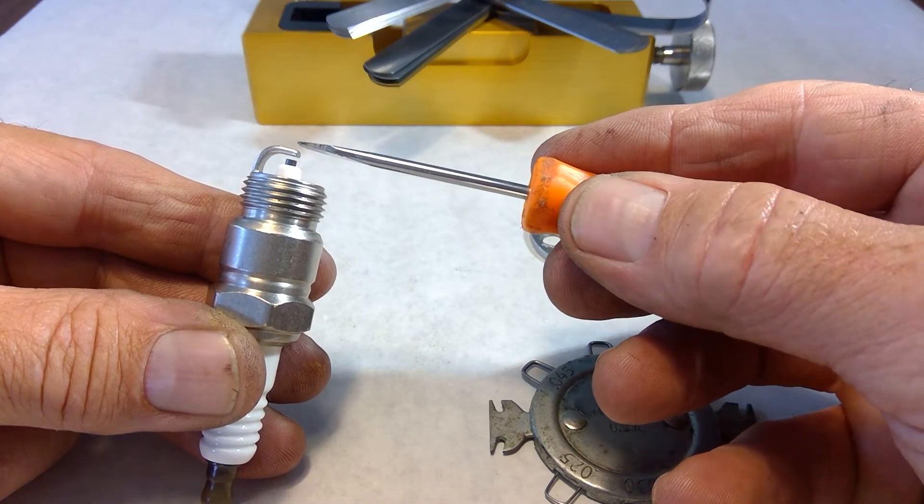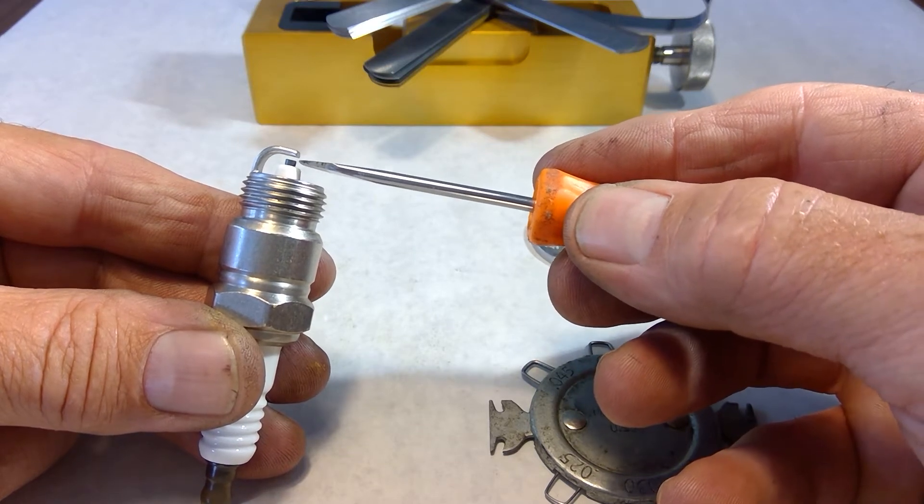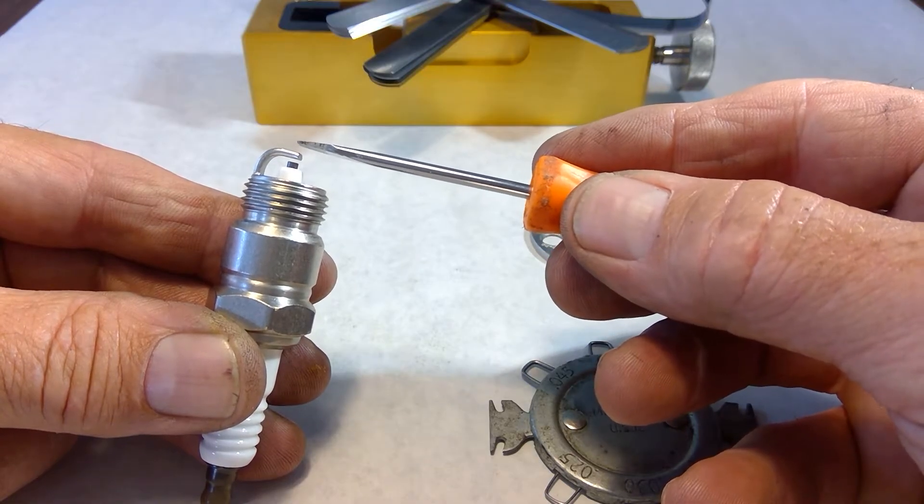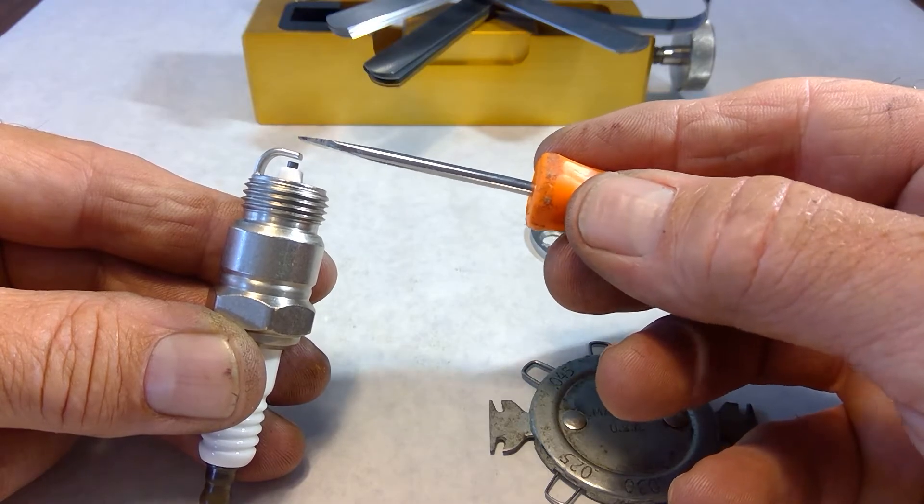If it's very easy to jump, so the gap is small, the spark is small. If it's very hard to jump, then it might create a big spark going across that gap, or it might not jump at all.